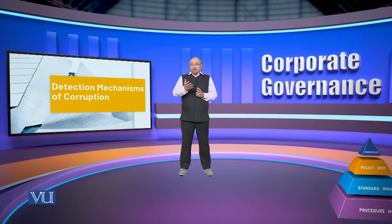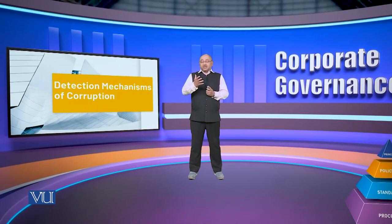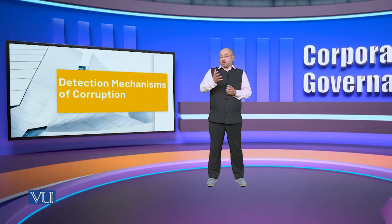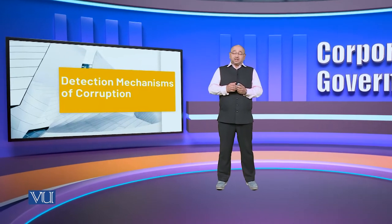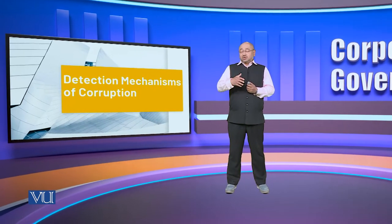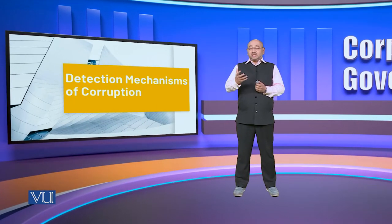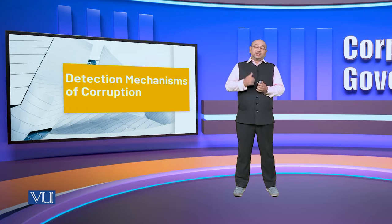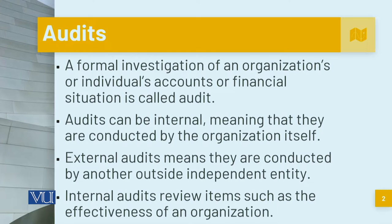Today we're going to talk about the detection mechanisms of corruption and we'll see how the corporate sector can be made more accountable, more transparent, and can avoid corruption in a better way. One of the most effective tools is called audits, and they can be internal or external.